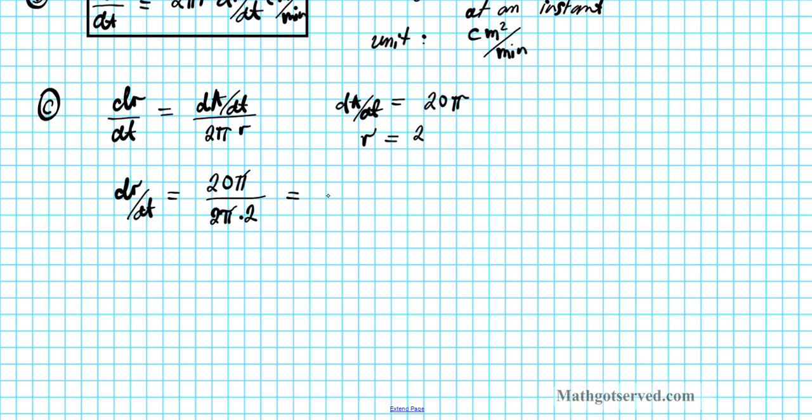If we simplify that, 2 goes, 2 and 2 is 4, it goes into 20 five times. The pi's cancel out. So we have 5. So dr/dt is equal to 5. What's the unit? It's length per time. The dimension of length in this problem is centimeters and the unit of time is minutes, 5 centimeters per minute.